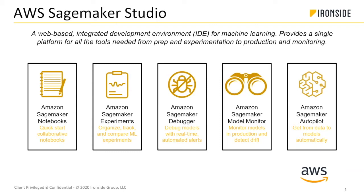Finally, SageMaker Autopilot is AWS's AutoML tool, which has gotten a lot of hype and been compared to DataRobot. I love AutoML — it does accelerate work — but I think it gets a lot of excitement when there are many other things in this platform that are also very helpful and accelerate the data scientist's work. For me, the whole end-to-end platform is really exciting. There are still some kinks they're working through, but it's a very promising platform.